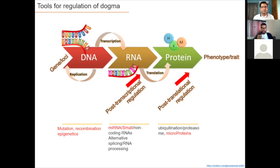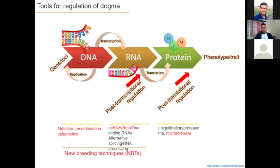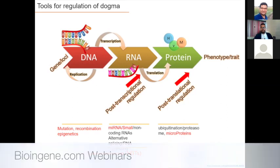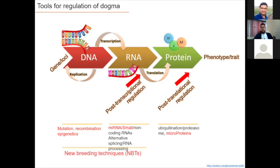There are not many tools that actually target post-translational regulation. There are new breeding tools including CRISPR and other nucleases — collectively called new breeding techniques — and they cover the DNA and RNA parts, but again not the protein part. So the complete set of controls we want to introduce into an organism includes DNA-level control, RNA-level control, and then protein-level control. Tools like mutation, recombination, and miRNA have all been used at the DNA and RNA levels, but very few exist for protein.